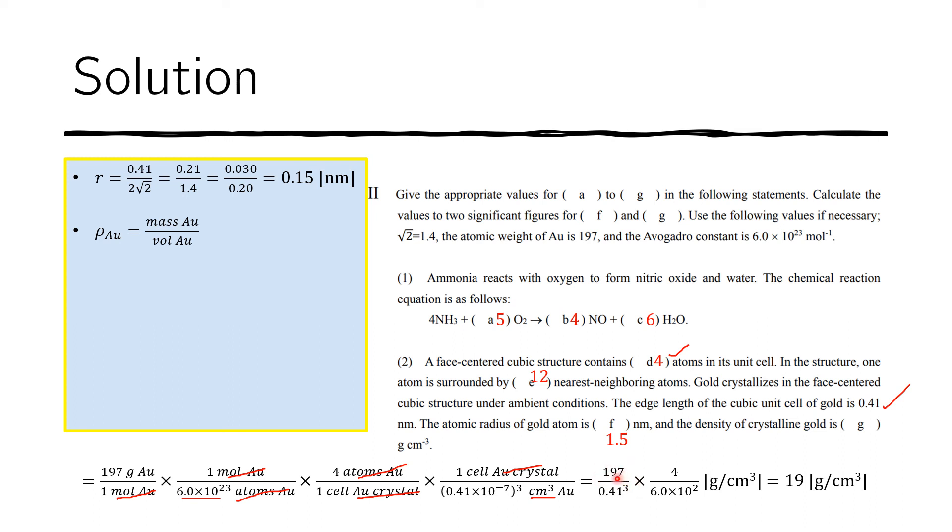First is instead of 197, I chose to use two significant figures because anyway, we'll have to give it in two significant figures. So 197 becomes 200 for me.